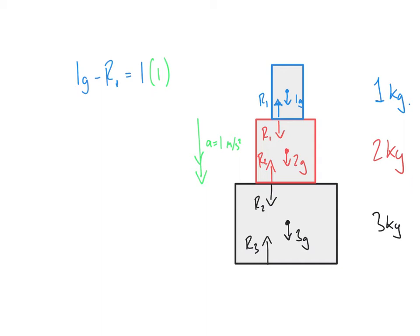If I then focused on the red box, I'd have 2g add R1, which is pointing down, and take away R2, which is pointing up, equals MA, so 2 times 1. Now notice there are two unknown reaction forces there. I don't know both of those numbers, so it becomes a bit more difficult.